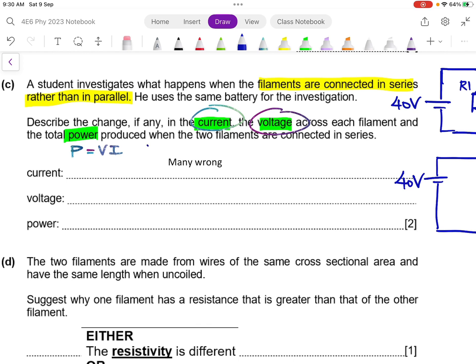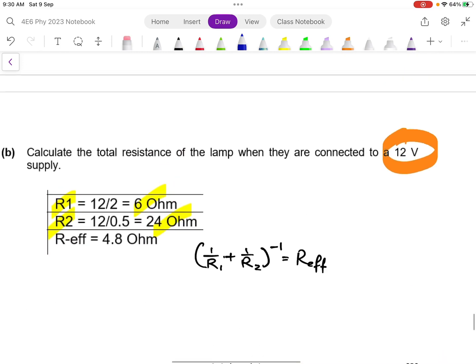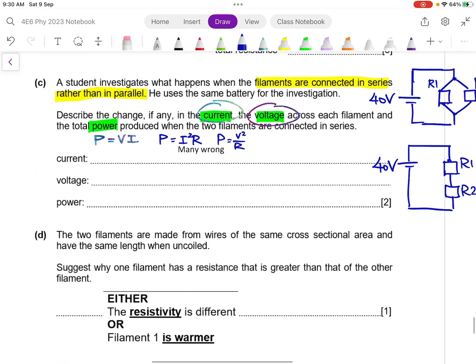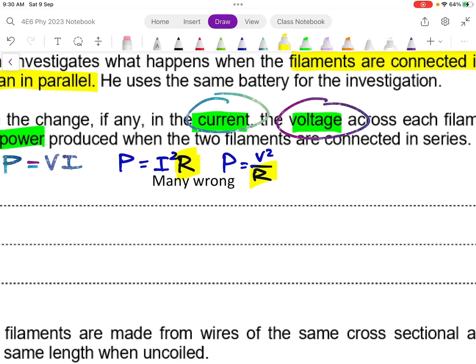Why is it that I no longer advise you to use P equals to I square R or P equals to V square over R? So at the beginning of the video, I am sharing with you that both filaments are non-ohmic. It means that the R over here is no longer a constant value. So if you are using this pair of equations, you have to investigate how R changed, how I changed and how V changed. Basically, you have added more difficulty to the deduction.